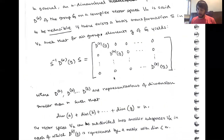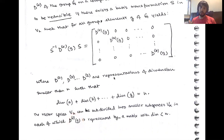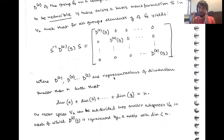D-A, D-B, up to D-Z are representations of a dimension smaller than N, where N is the dimension of D-alpha. The dimensions of A, B, up to G add up to N. So the vector space can be subdivided into smaller vector spaces. Vn can be divided into smaller vector spaces V-alpha, in each of which D-alpha of G is represented by a matrix of dimension less than N. This is how you can have a reducible representation.